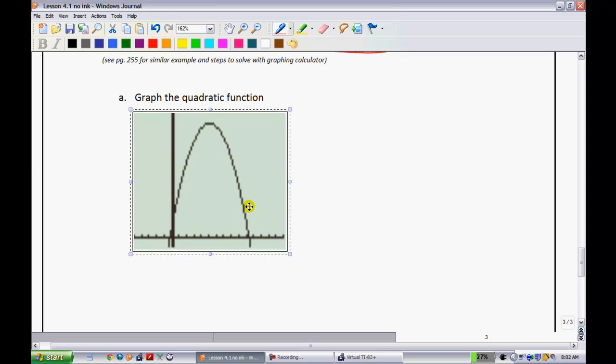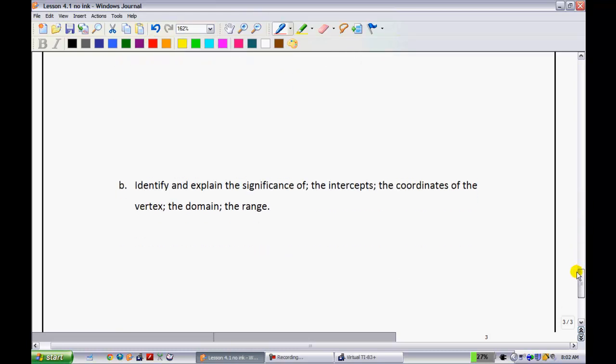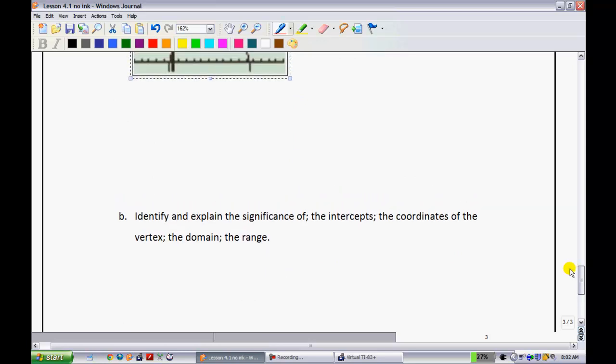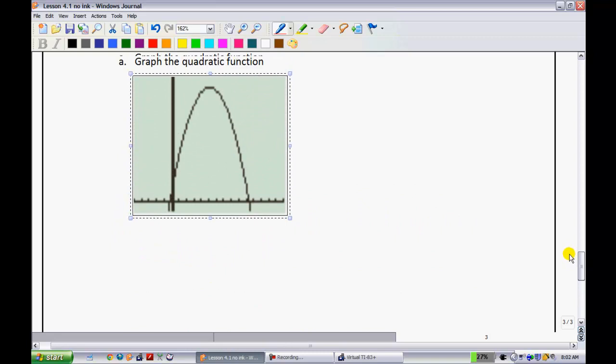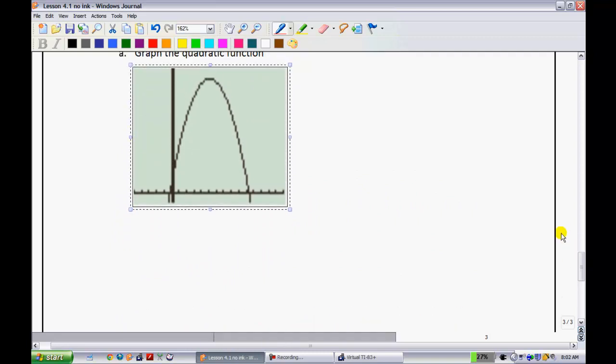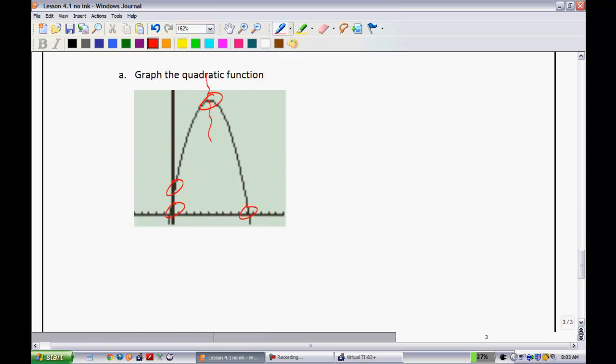Now what we have to do is we have to go and find all this information about the graph. As a result, what are we looking for down here? Well, it says I want you to get the significance, identify and explain the significance of the intercepts, the coordinates of the vertex, and the domain and range. So what we're going to do is we're going to first just go and find that information, then I'll talk to you about the significance. So we're looking for, for instance, this vertex, the intercepts here and here, and my domain and range. You've got to get your axis of symmetry. That's this little line coming down the middle here.